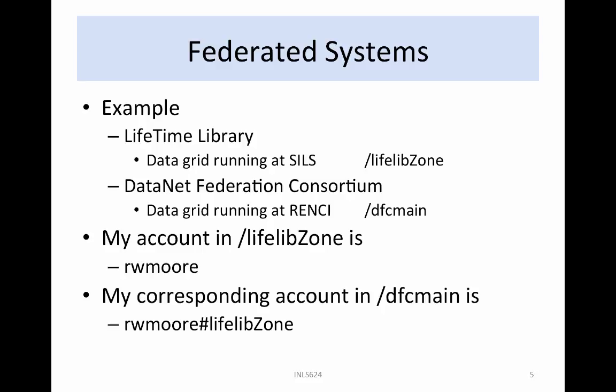My account in LifeLibZone is R.W. Moore — this is my home data grid. My corresponding account in DFCMain is R.W. Moore pound LifeLibZone. My home data grid identity has to be linked to my account name in DFCMain. I can log into the Lifetime Library data grid and then access files in my account in the DataNet Federation Consortium data grid. I do not have to log in a second time, as the data grids manage the verification of my identity automatically. The DFCMain data grid trusts the LifeLibZone data grid that I have correctly logged into the Lifetime Library.